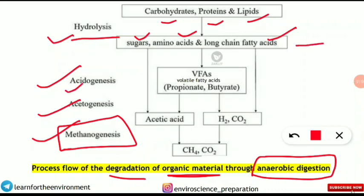The second step is acidogenesis, where acids are formed. Specifically, volatile fatty acids (VFAs) are produced. The key VFAs formed in this stage are propionate and butyrate — these two are the important volatile fatty acids formed during acidogenesis.